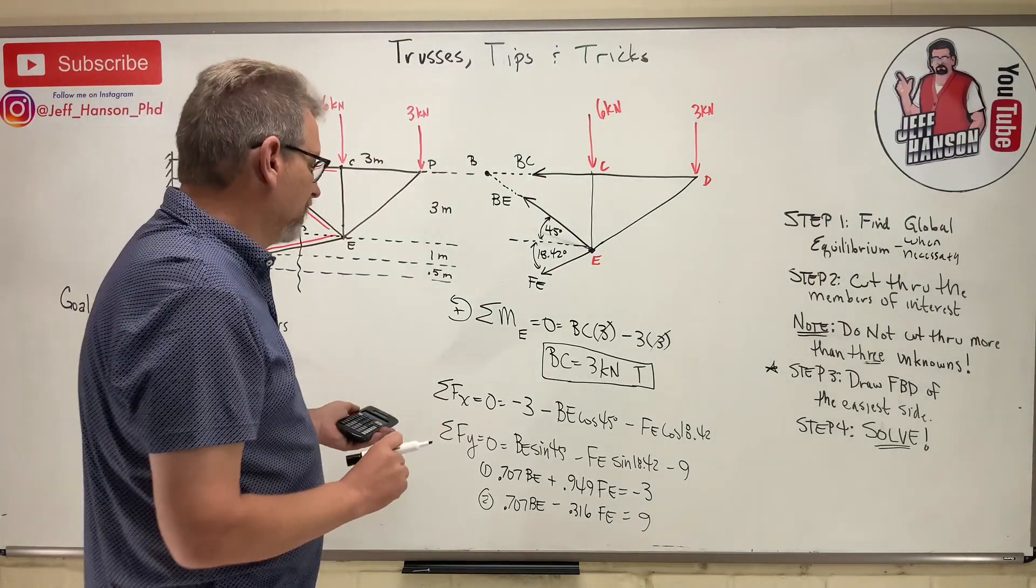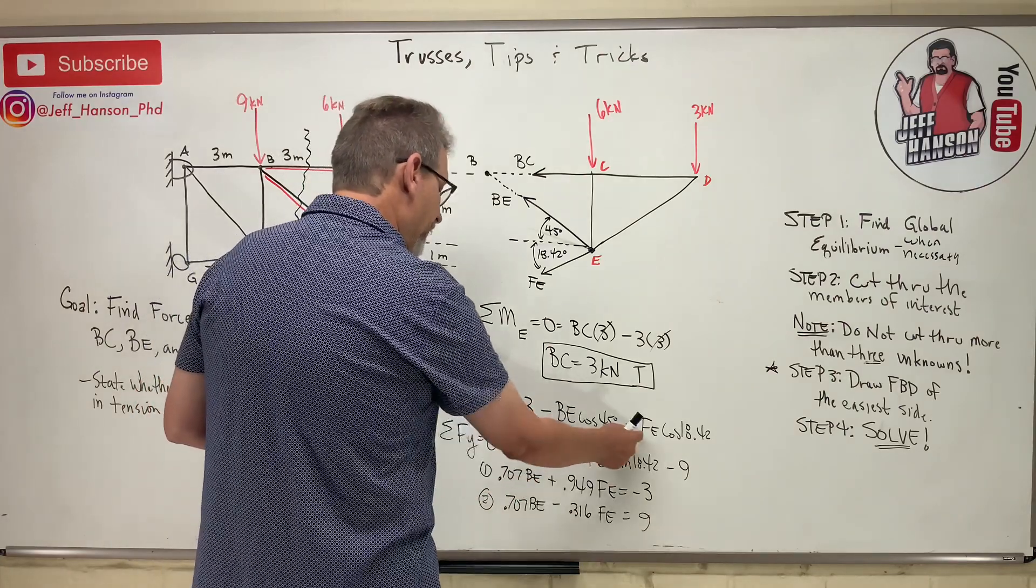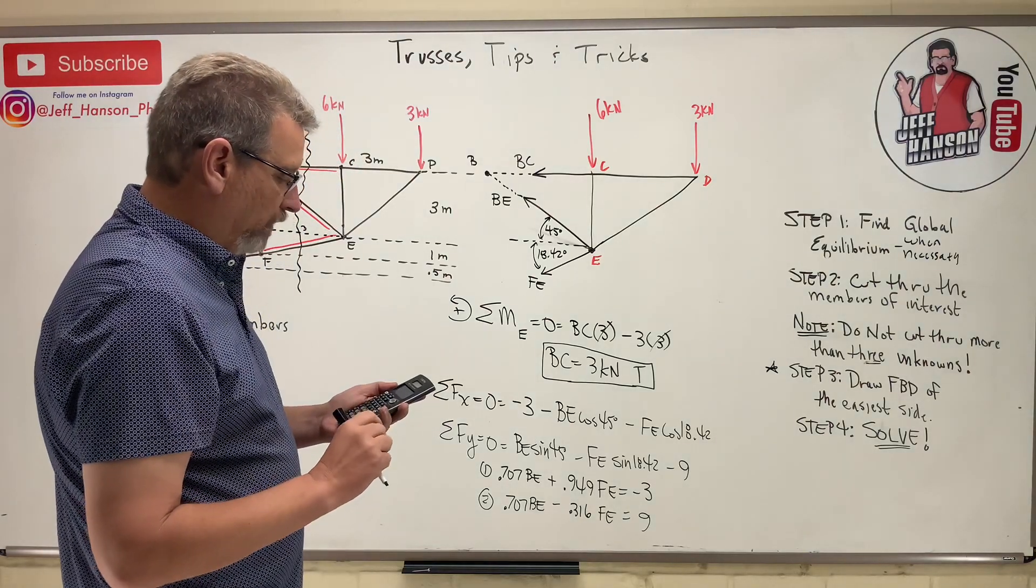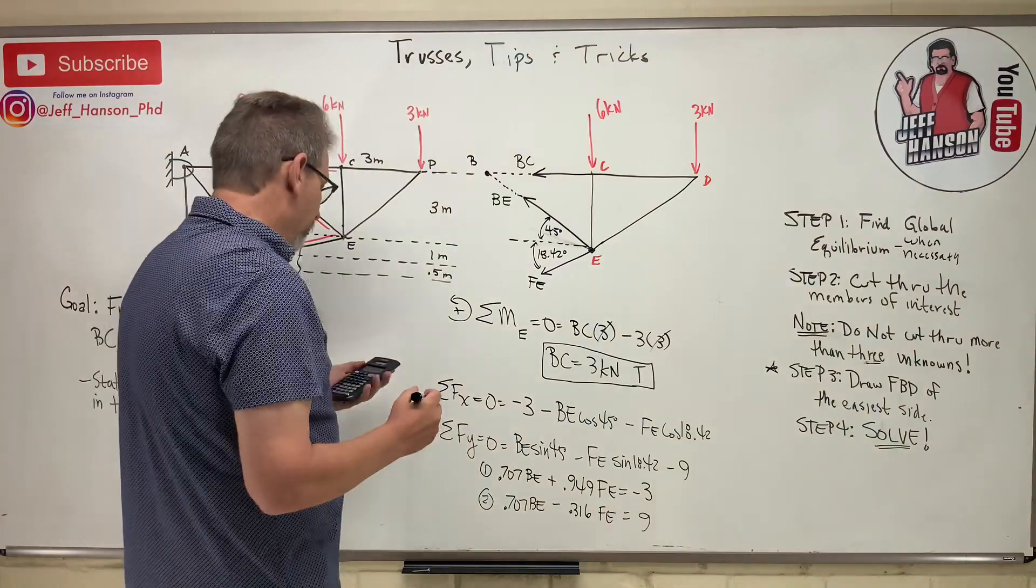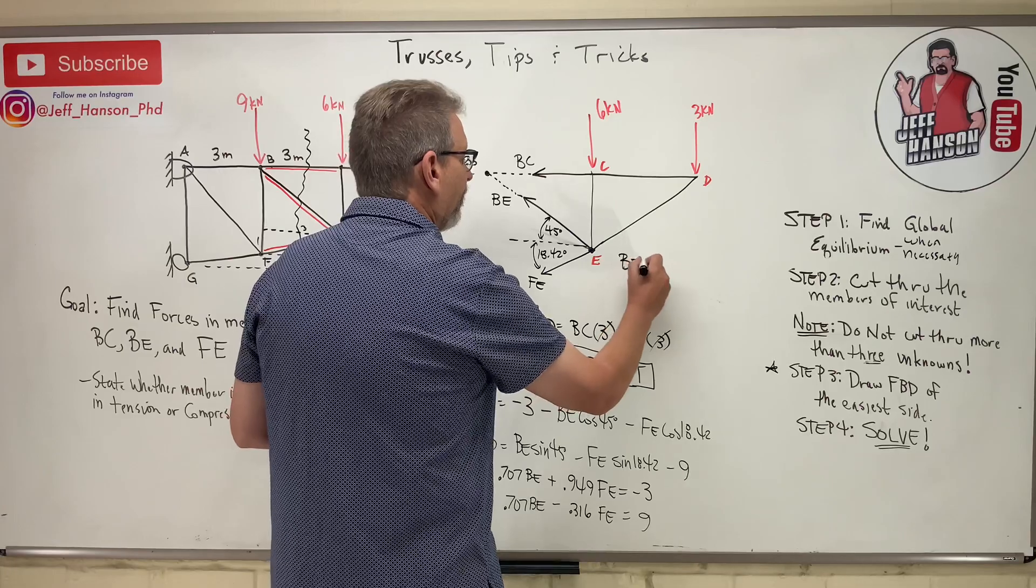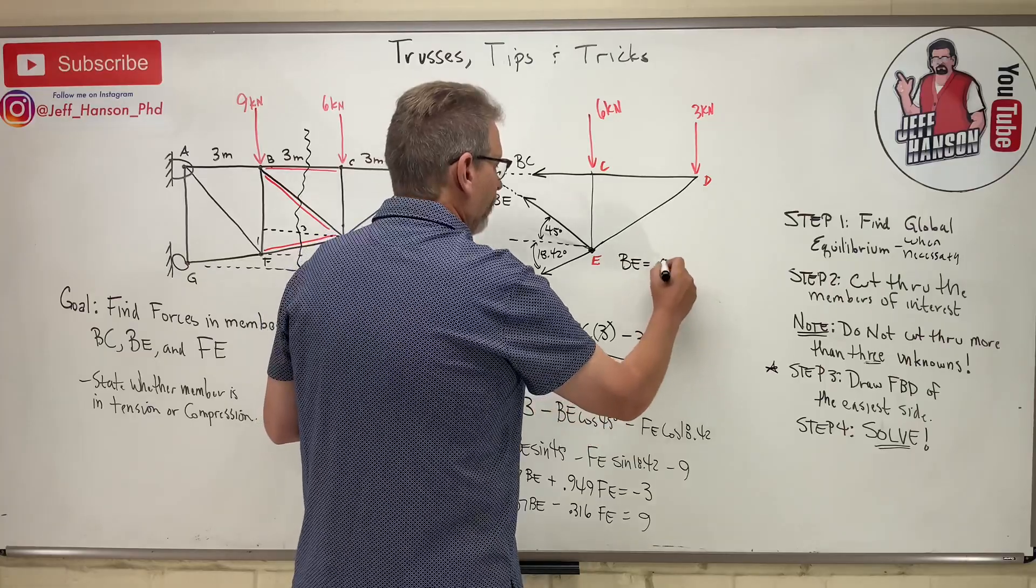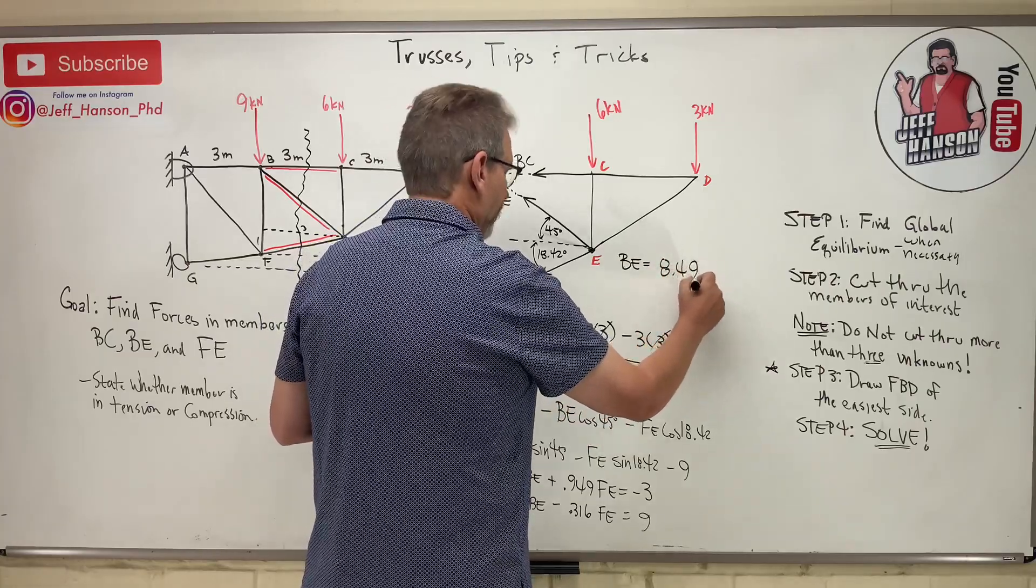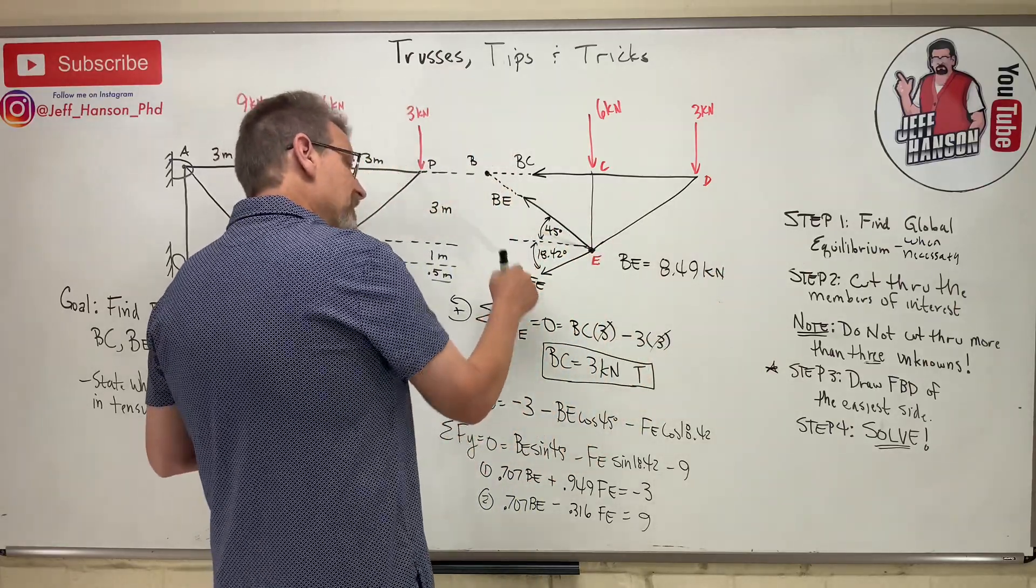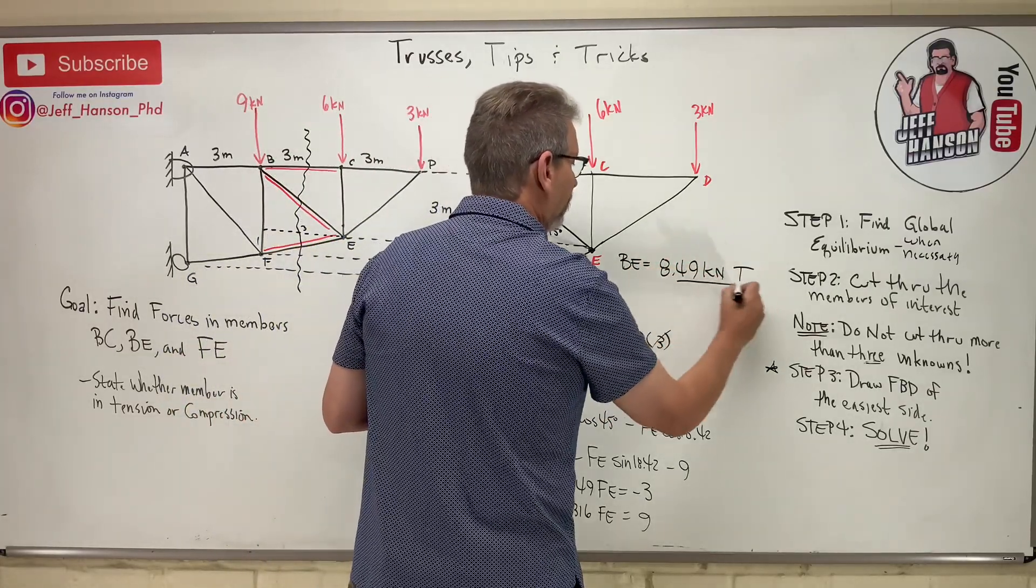One of these is going to be negative, because you can't have an equation like this. You can't have a negative, a negative, and a negative equal to zero. That just doesn't work. So one of these is backwards. Who is backwards? And it gives me that BE, the first one here, BE is equal to 8.49. And that's kilonewtons. And it's a positive number. So I assumed him in tension for BE. I assumed him in tension. So he really is in tension.